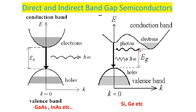If electrons have to transition from the conduction band to the valence band in silicon or germanium, they must change from one K value to another K value before the transition occurs. These kinds of semiconductors are known as indirect band gap semiconductors.